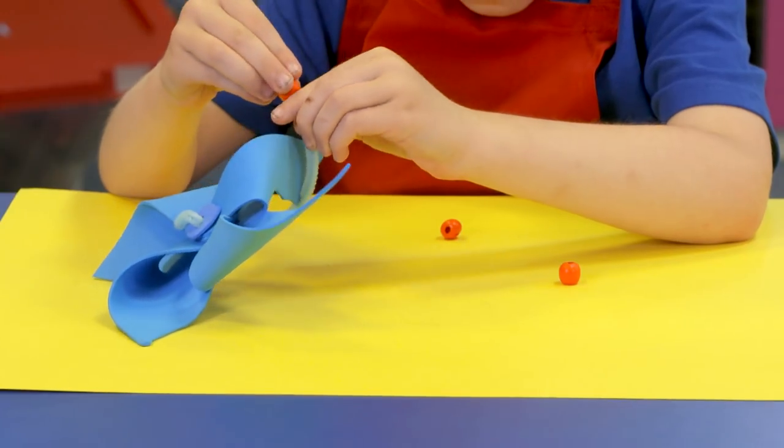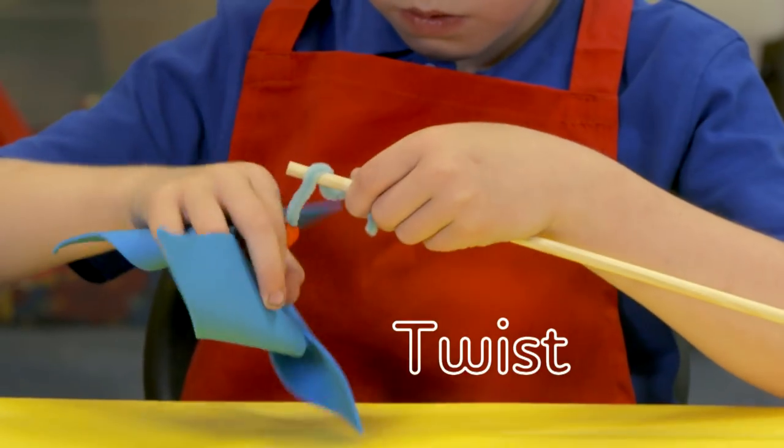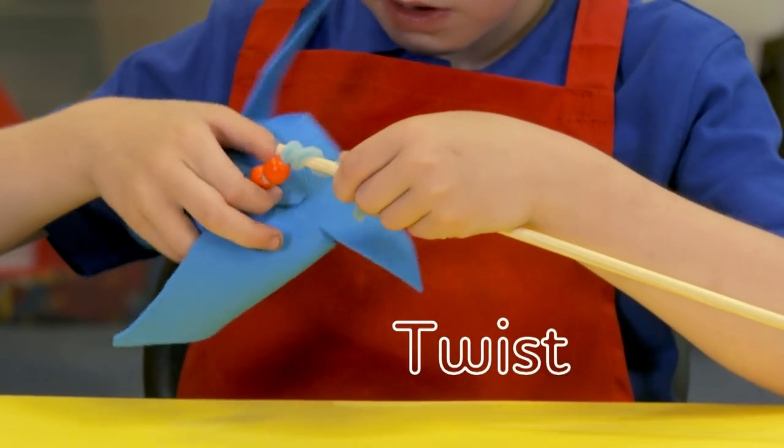Fold over and add some beads. Twist the pipe cleaner around some doweling or a stick.